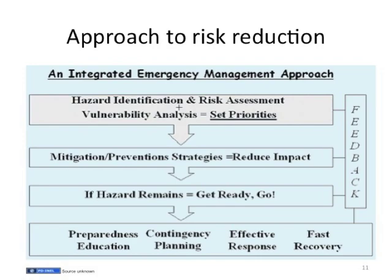The figure presents an approach to risk reduction. The integrated emergency management approach involves hazard identification and risk assessment plus vulnerability analysis, which leads to setting priorities. This goes to mitigation and prevention strategies to reduce the impact of disasters, continuing to getting ready if the hazard remains. This results in preparedness education, contingency planning, effective response, and fast recovery. All this is underlied by feedback at all stages.